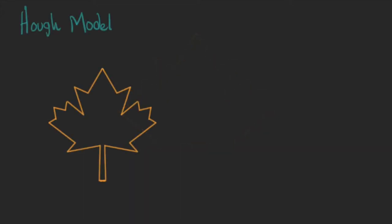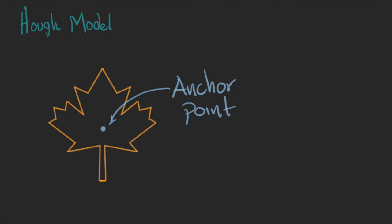This is called the Hough model, and it contains relevant information to describe the shape. The first step to create the Hough model is to define an anchor point. It could be the centroid of the shape, but you can decide where to put it. We will use this point as a reference for the search.